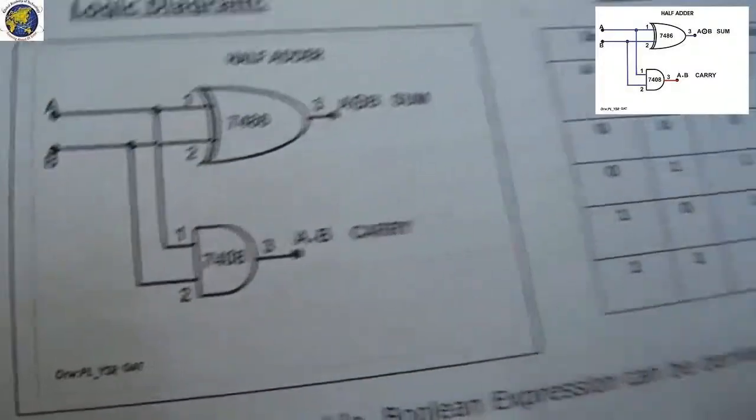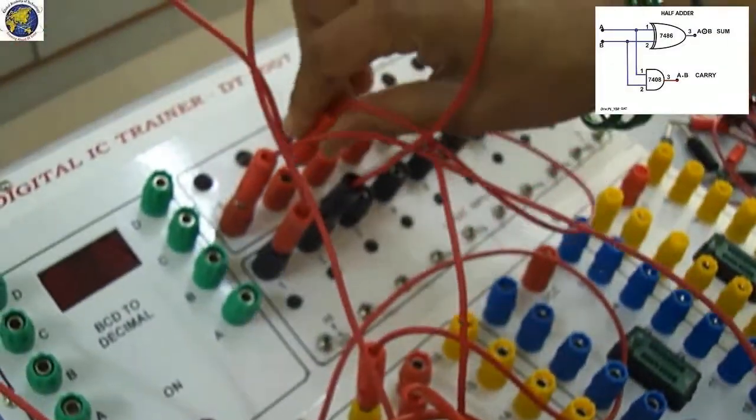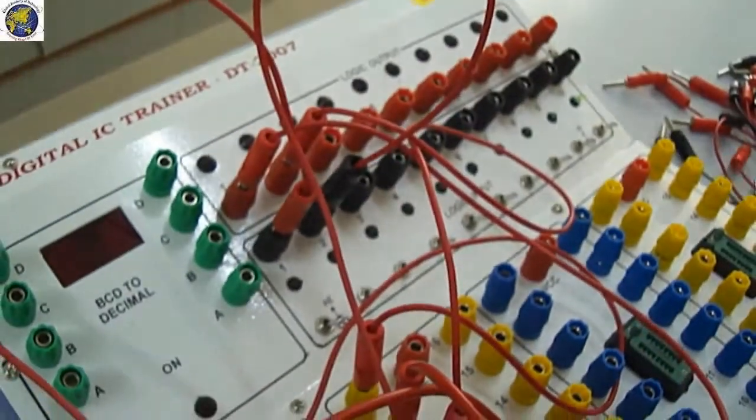Next, connect pin number 7 to ground for both ICs, 7486 and 7408.